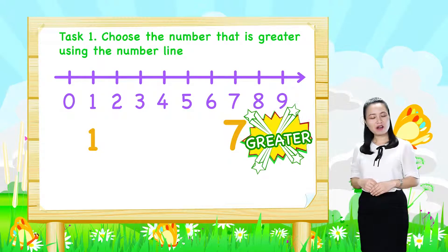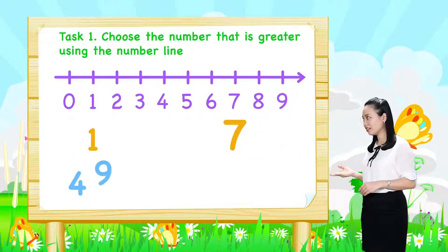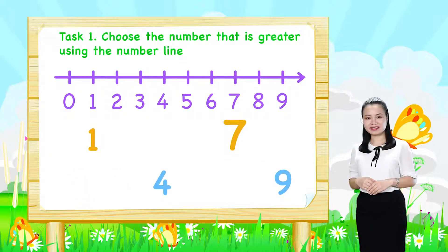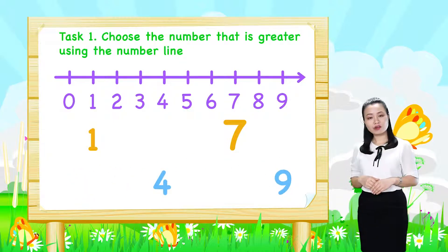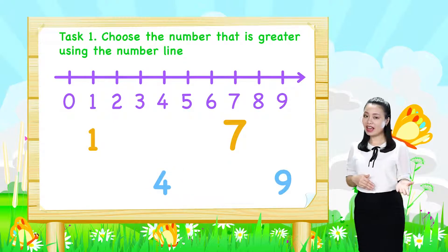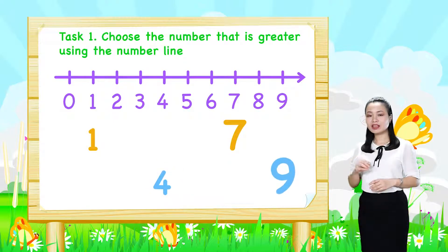Next, for the pair 9 and 4, number 9 is to the right of number 4. Therefore, 9 is greater.